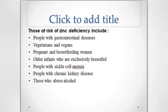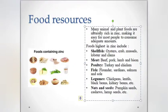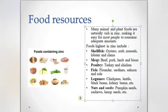We will discuss various food sources of zinc. Many animal and plant foods are naturally rich in zinc, making it easy for most people to consume adequate amounts. Foods with the highest zinc content include shellfish such as crabs and lobsters; meats like beef, lamb, and bison; poultry like turkey and chicken; fish like sardines, salmon, and sole; and nuts and seeds like pumpkin seeds, cashews, and hemp seeds.